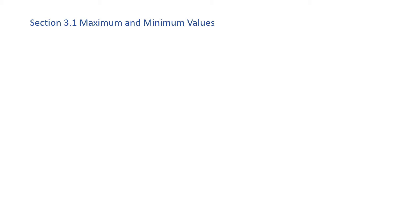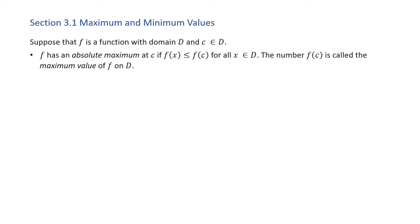Let's begin with the formal definition of these two terms. Suppose that f is a function with domain D and c is an element of that domain. f has an absolute maximum at c if f(x) is less than or equal to f(c) for all x in D. The number f(c) is called the maximum value of f on D. The max value occurs at c, and the max value is f evaluated at c.